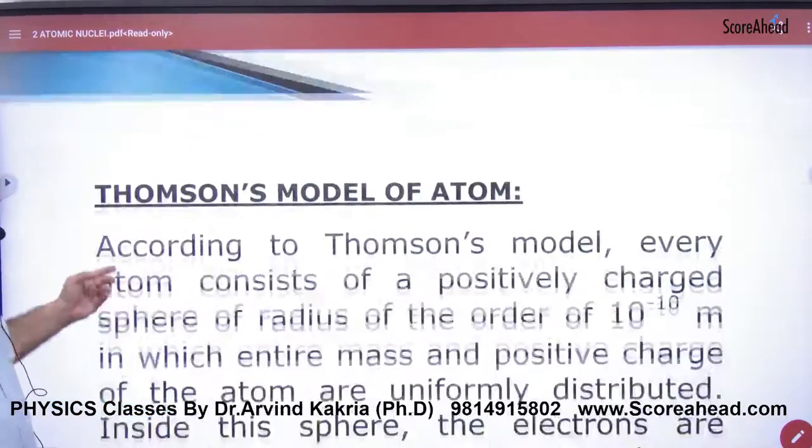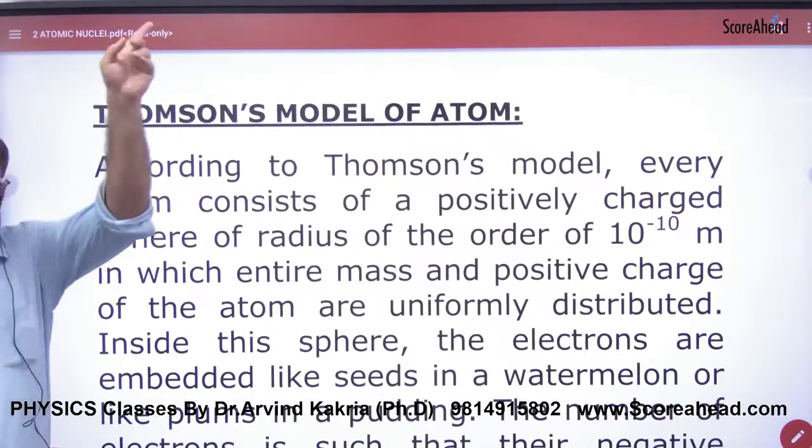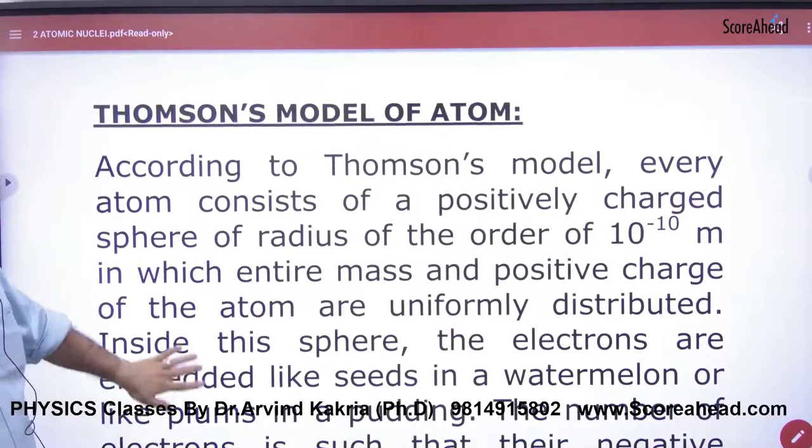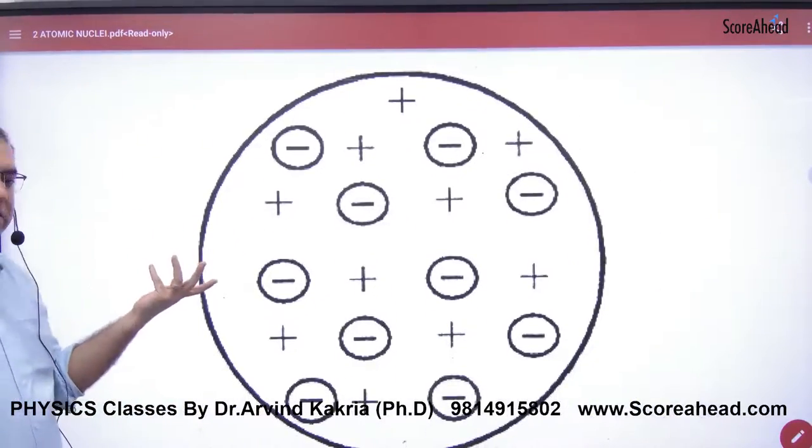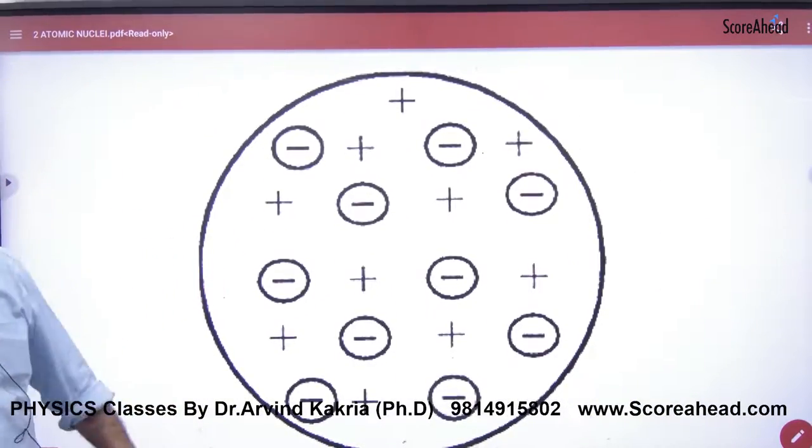What did he do in the chapter of Atoms? First of all, I had told you where we are starting from Thomson's model. Thomson's model says that it's plus minus equally distributed. This model didn't work.